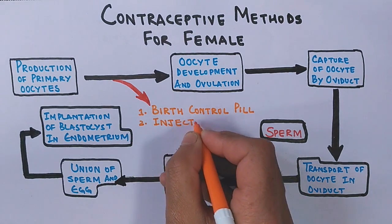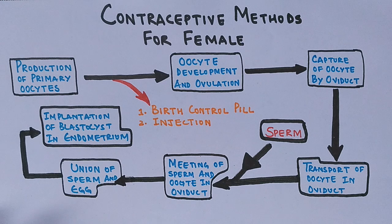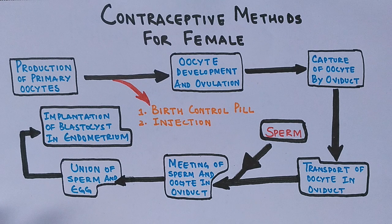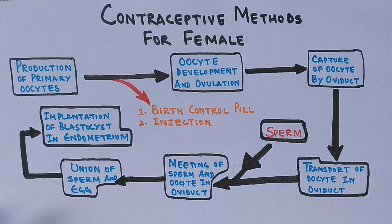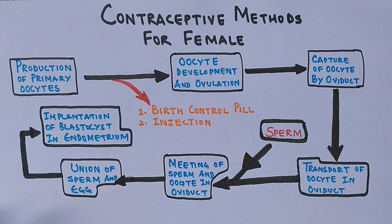Then we have a contraceptive injection. It is another method to control ovulation — it's actually a hormone, progesterone, injected into the female body that lasts for 8 to 13 weeks depending on the type of injection. It's a long-acting reversible contraception that does not depend on taking it daily and is more than 99 percent effective.